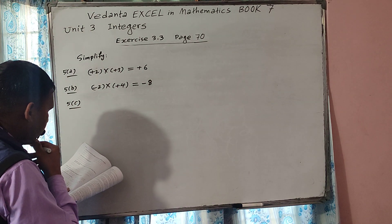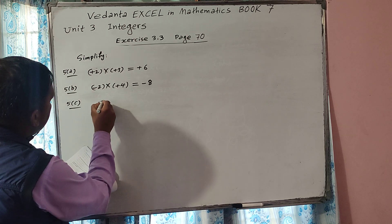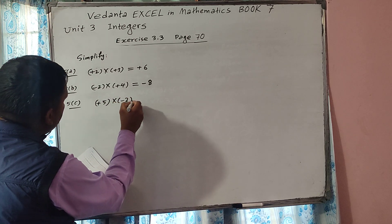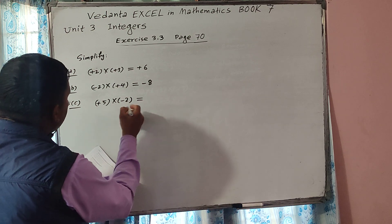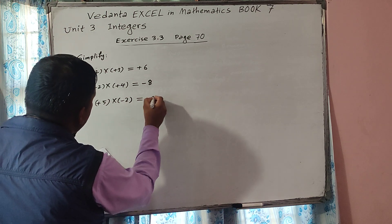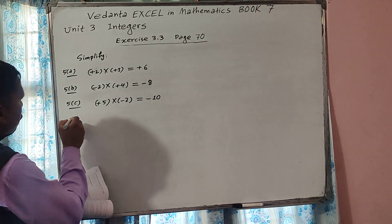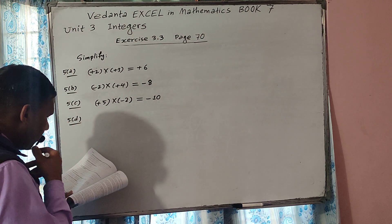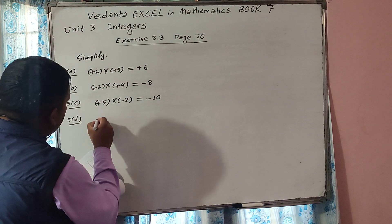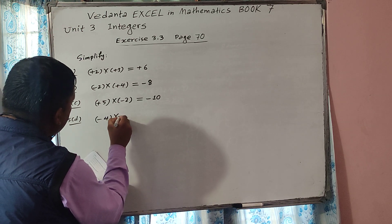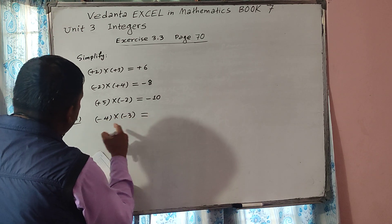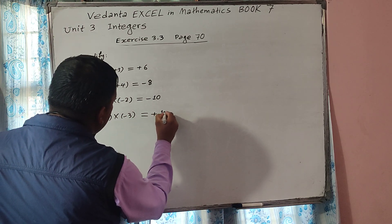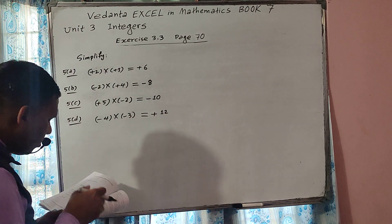And 5C: plus 5 multiplied by minus 2. Plus 5 multiplied by minus 2. We know plus into minus gives minus, so 5 times 2 is 10 — minus 10 is the answer. And 5D: minus 4 multiplied by minus 3. We know that minus into minus gives plus, so 4 times 3 is 12 — plus 12 is the answer.